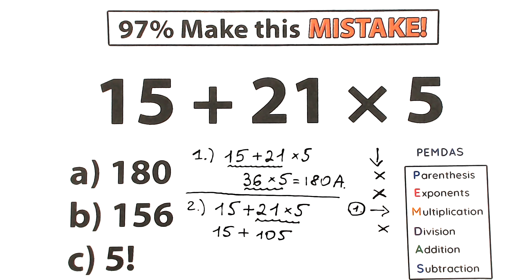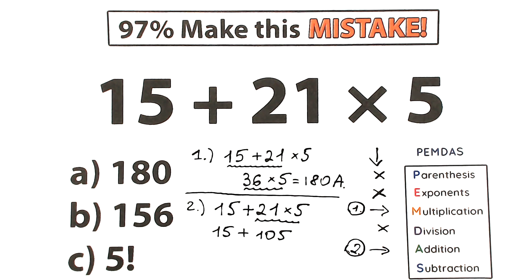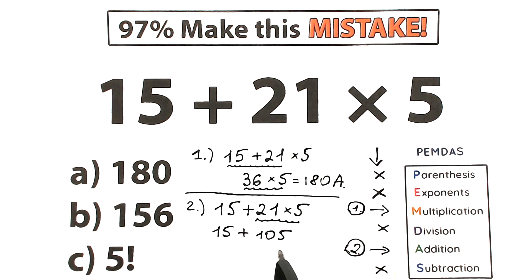So 21 times 5 equals 105. Now the last step: addition. We have an addition sign, and addition comes after multiplication in PEMDAS. So as our final step we add 15 plus 105, and we don't have any subtraction. 15 plus 105 gives us 120.